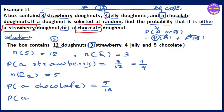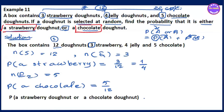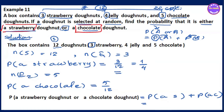The probability of strawberry or chocolate equals P(strawberry) plus P(chocolate), which is 6 by 12 plus 5 by 12, giving 8 by 12. So, that simplifies.